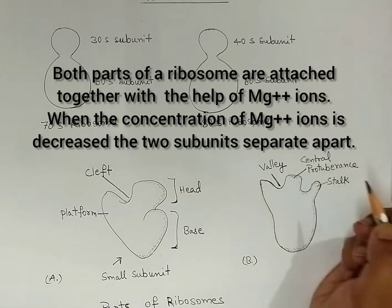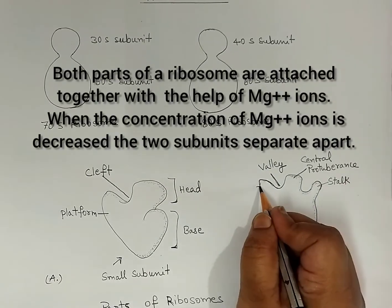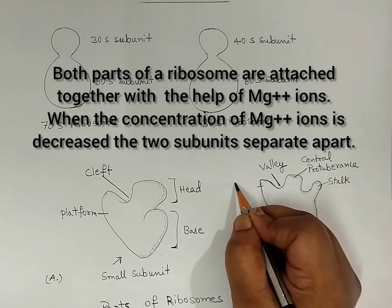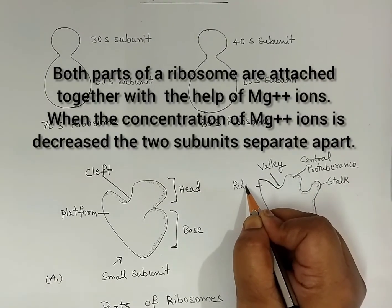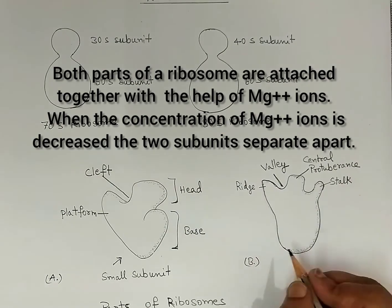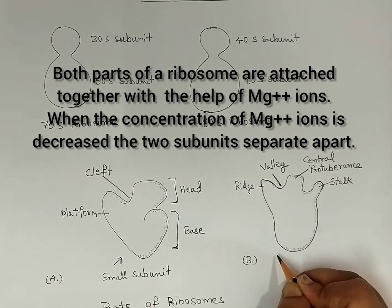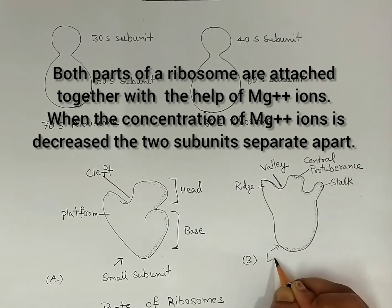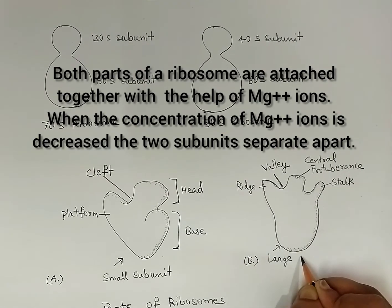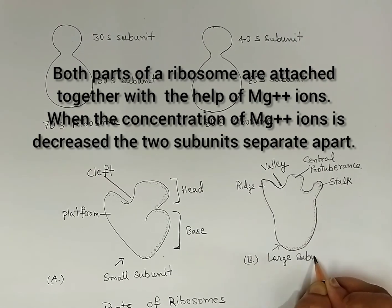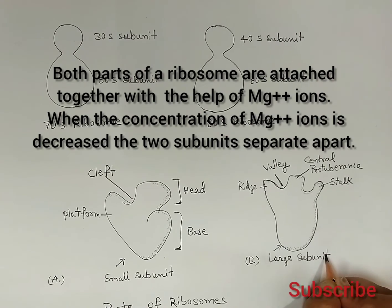Both parts of a ribosome are attached together with the help of magnesium ions. When the concentration of magnesium ions is decreased, the two subunits separate apart.